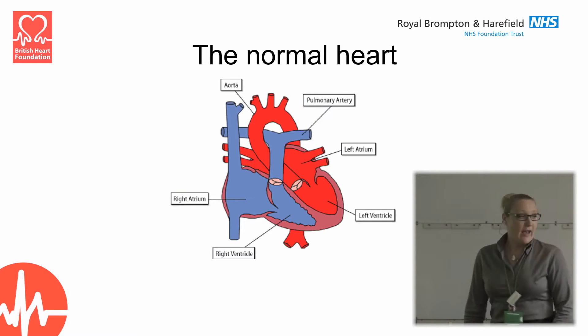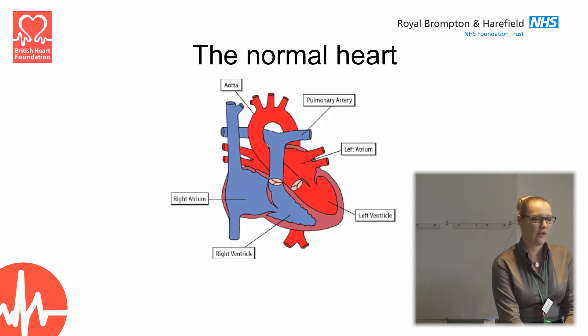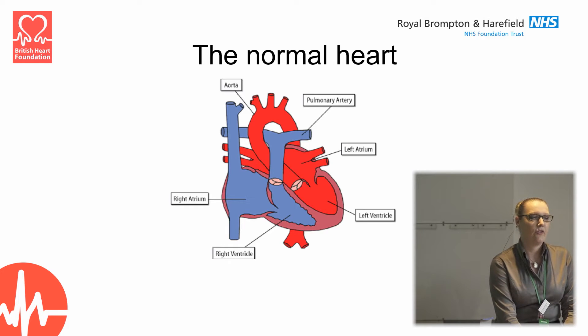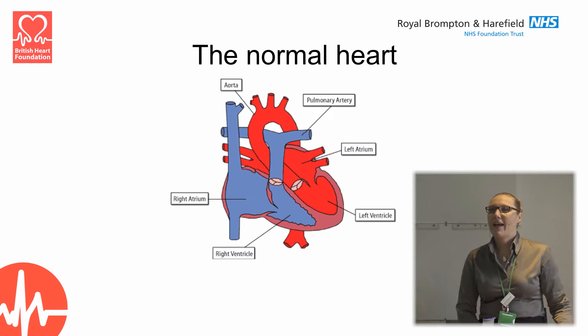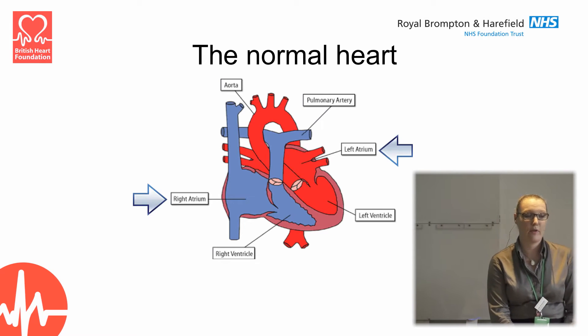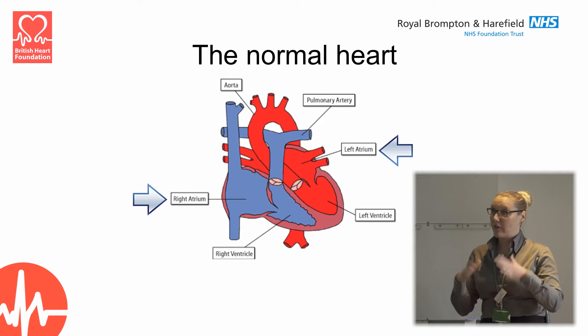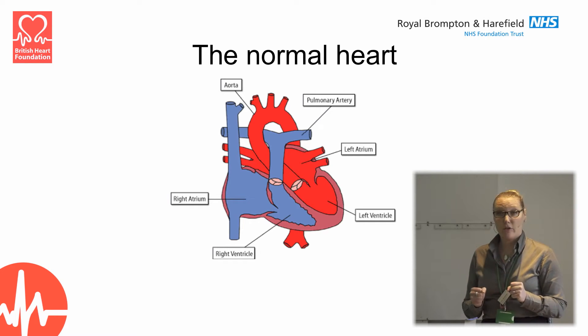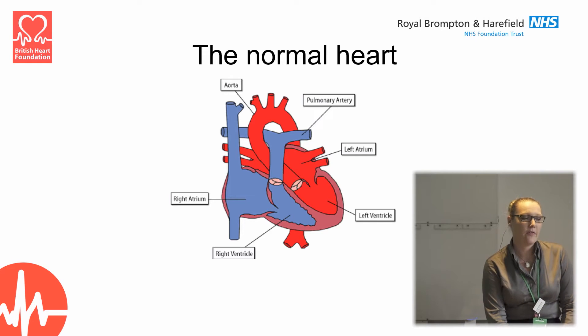In the normal heart we have four chambers: the right atrium, left atrium, right ventricle, and left ventricle. The top chambers — the atria — collect the blood coming back into the heart from either the lungs or the body. The blood goes through valves, which act like doors: they open to let the blood flow in and close when we don't want blood to move the wrong way. The ventricles at the bottom are big pumps that pump the blood out to either the body or the lungs.